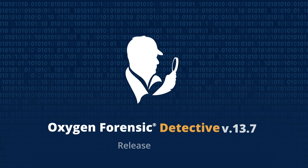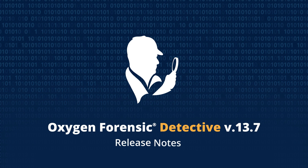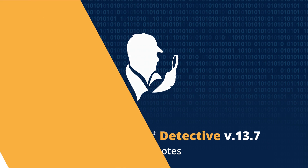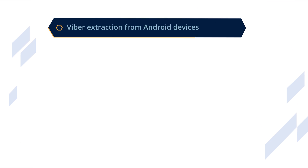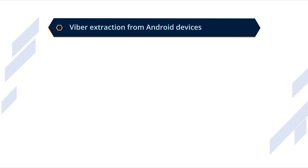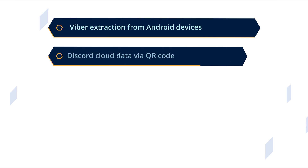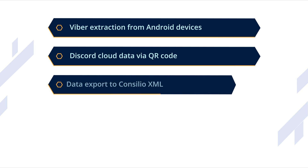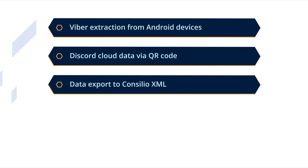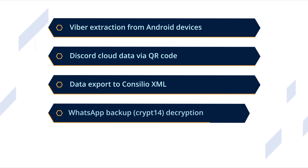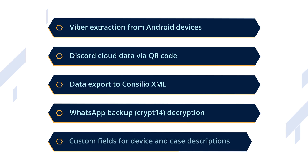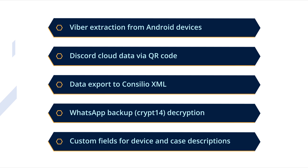Oxygen Forensics introduces a new version of Oxygen Forensic Detective 13.7. With this version, you can extract Viber data from any unlocked Android device, acquire Discord cloud data via QR code, export extracted evidence to Consilio XML, decrypt the latest WhatsApp backups, and add custom fields for device and case descriptions.